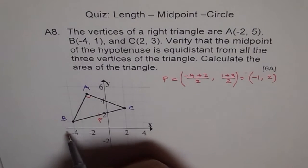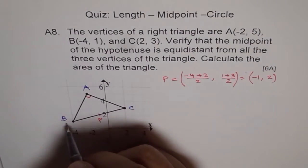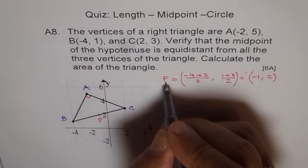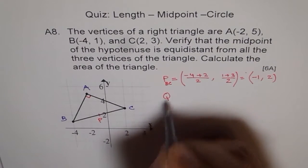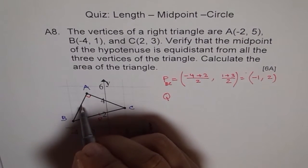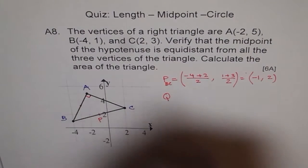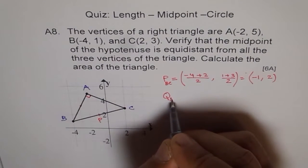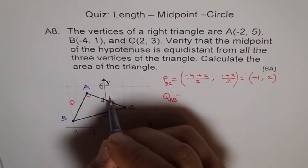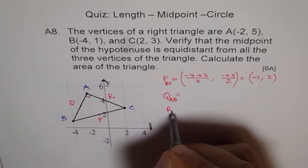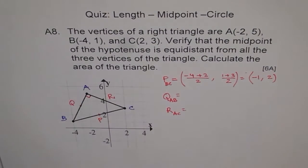Similarly, you can find midpoints of the other points. So P basically is midpoint for BC. Similarly, Q is midpoint of AB. That point is not exact. You have to calculate. Q is midpoint of AB. Use similar formula. And let us say R is here. And then R is midpoint of AC. Use this formula. Find your answer.